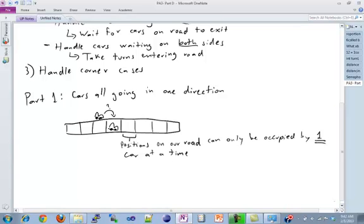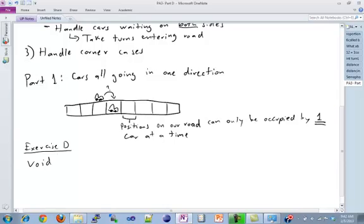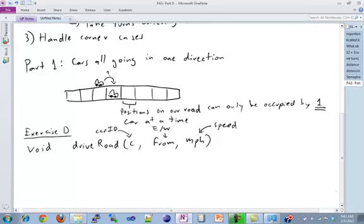So how do you go about implementing that? If you go to exercise D, PA3D.C, you will see a lovely drive road method. This is the method you're going to be modifying, mostly. Let's understand what this method is. It takes in a C, it takes in a from, and it takes in an MPH. So this is the car's speed, this is the car's ID, and this is east or west, where they're coming from.